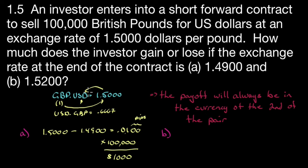Part (b) asks us what if it were 1.52? Well, 1.50 minus 1.52 is negative 0.02, negative 200 pips times 100,000. You would lose $2,000.